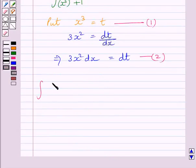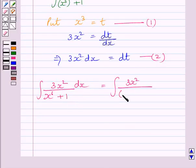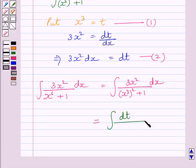Now we can write ∫ 3x²/(x^6 + 1) dx = ∫ 3x²/[(x³)² + 1] dx. Using expressions (1) and (2), this integral equals ∫ dt/(t² + 1).